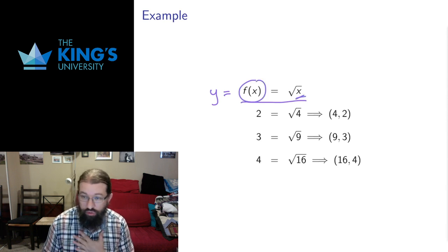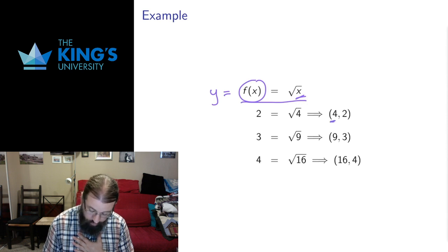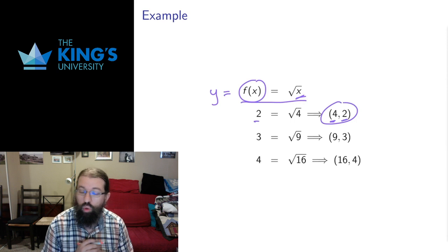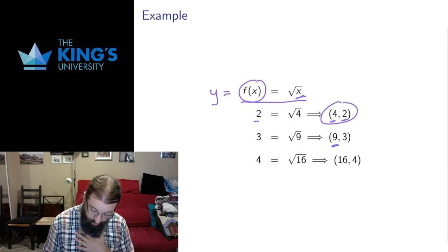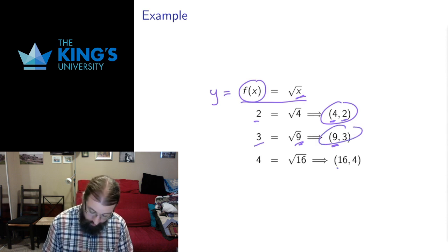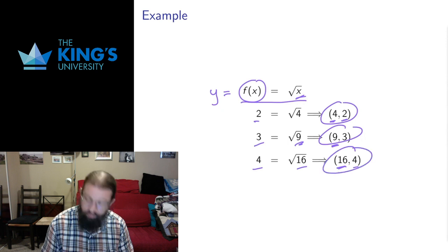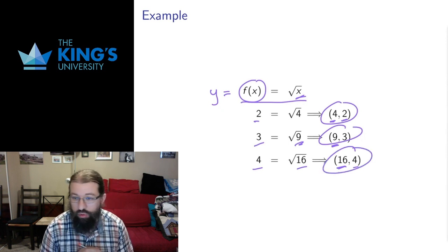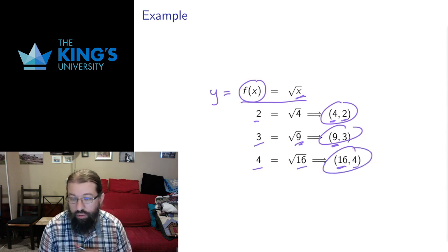For the square root function if the input is 4, if the x-coordinate is 4, the output is 2, so the point (4,2) will be on the graph. If the input is 9, the output of square root of 9 is 3, so the point (9,3) will be on the graph. If the input is 16, the output is 4, square root of 16 is 4, so the point (16,4) will be on the graph.